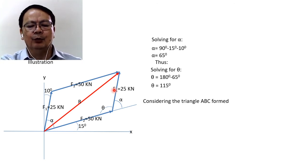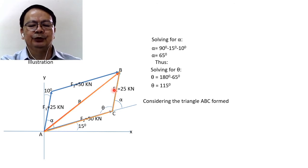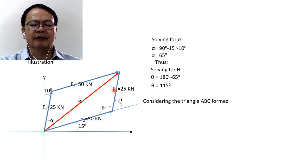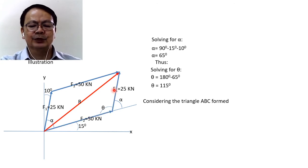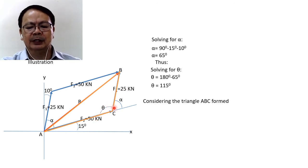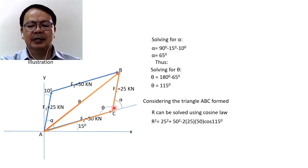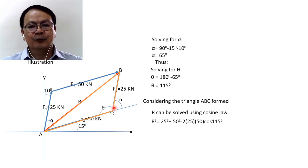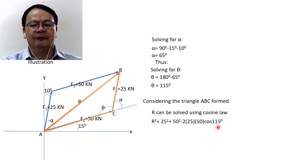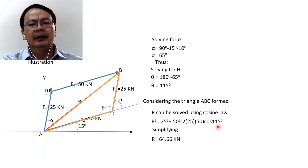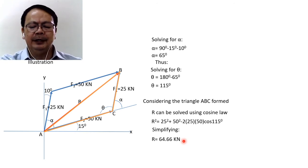We can now consider the triangle formed — the orange triangle. This triangle has two known sides: F1 equal to 25 and F2 equal to 50, and the included angle of 115 degrees. We apply the cosine law: R squared equals 25 squared plus 50 squared minus twice the product of 25 and 50 times cosine of 115 degrees. Simplifying, R equals 64.66 kilonewtons.